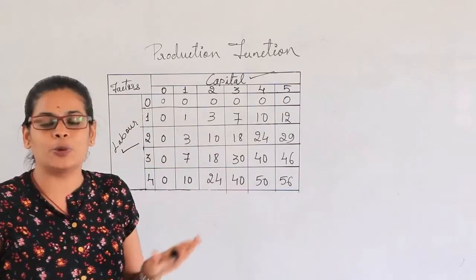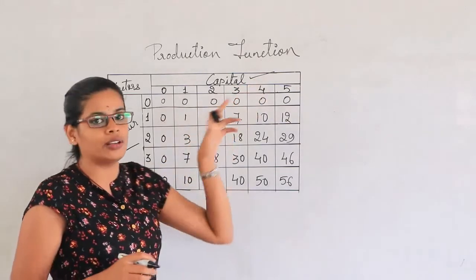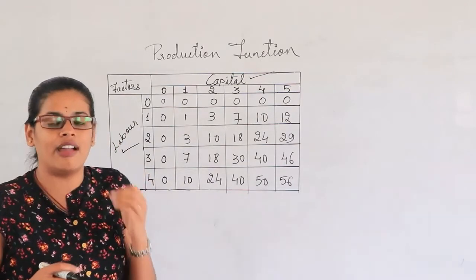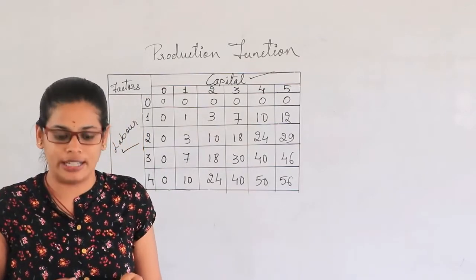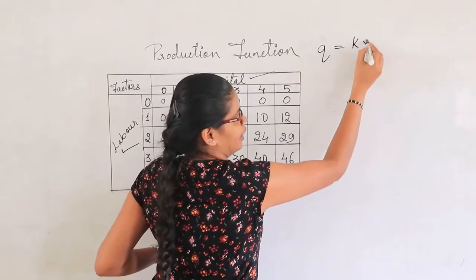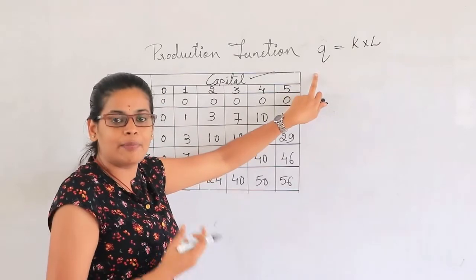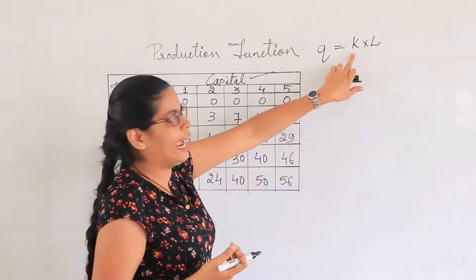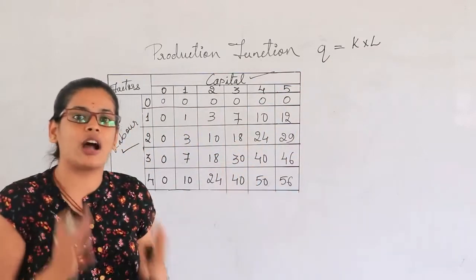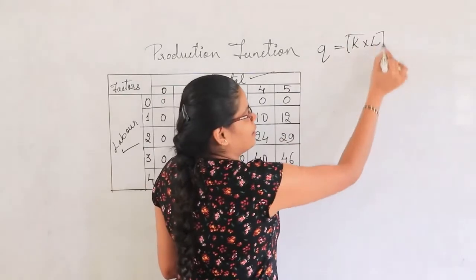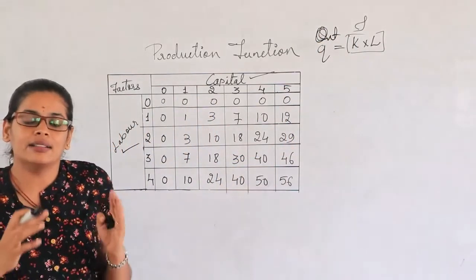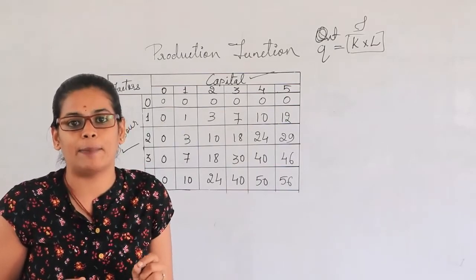Without these two factors we cannot produce any commodity. Capital is the amount which is committed to start a business or to develop a commodity. Labor is the helping factor which helps us build the commodity. When we talk about the production function, it will be Q equals K into L — where Q is the quantity produced or output, K is capital, and L is labor. The relationship between capital and labor tells us how much output we have received.